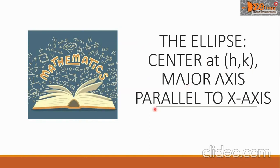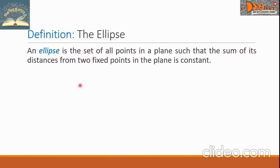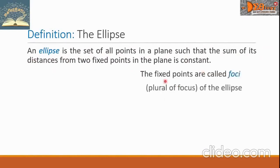First, let us define the ellipse. An ellipse is the set of all points in a plane such that the sum of its distances from two fixed points in the plane is constant. The fixed points are called foci — plural of focus — of the ellipse. Here we have two points arranged horizontally, and we consider these as the foci of the ellipse.